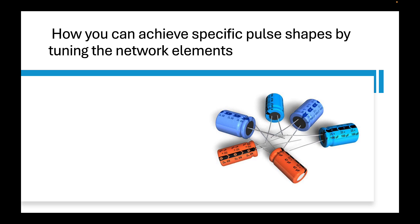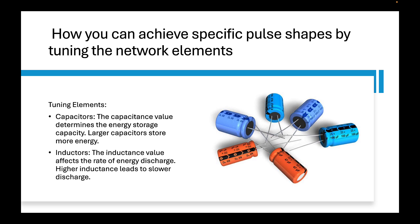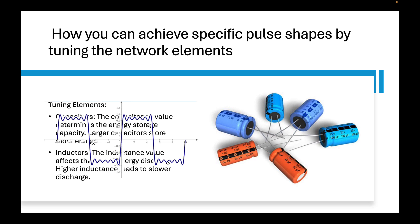So how can you achieve a specific pulse shape by tuning the network elements? The capacitors and inductors store energy, and these energy levels feed the network when required. For instance, in a linear accelerator, the IGBT capacitors are able to store 1400 volts, and when needed, it can be discharged into the transformer in order to feed the network.